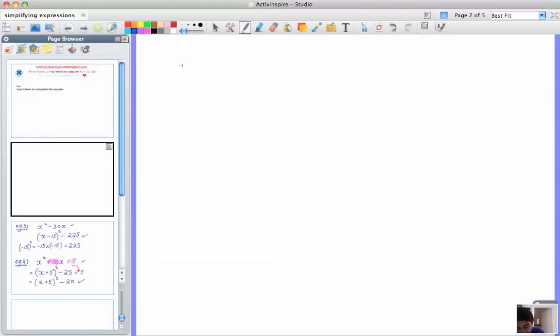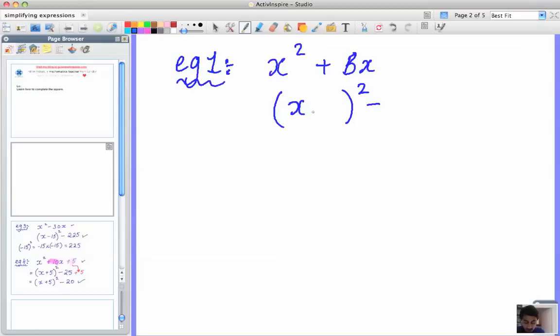The first example would be, let's say we had something like x squared plus 8x. So, I've got x squared plus 8x. Now, how do I complete the square? The first thing you need to do is open up a set of brackets, put a square, and put a minus. Now, once you've done that, then put an x inside the bracket.